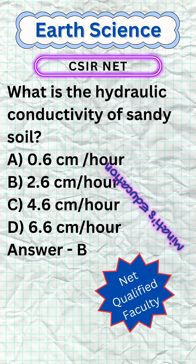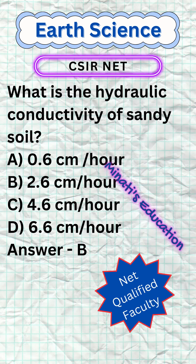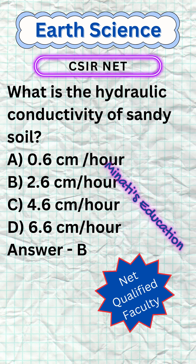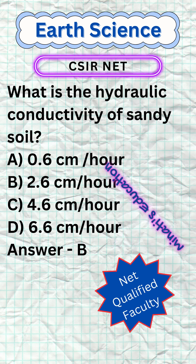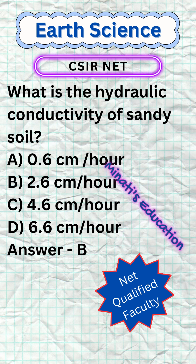What is the hydraulic conductivity of sandy soil? a. 0.6 cm per hour. b. 2.6 cm per hour. c. 4.6 cm per hour. d. 6.6 cm per hour.